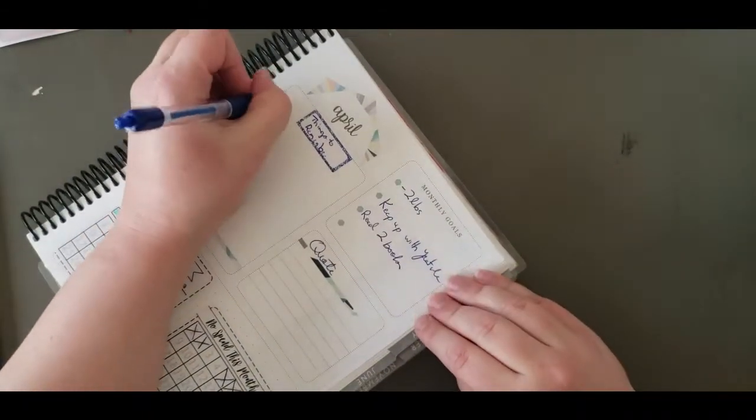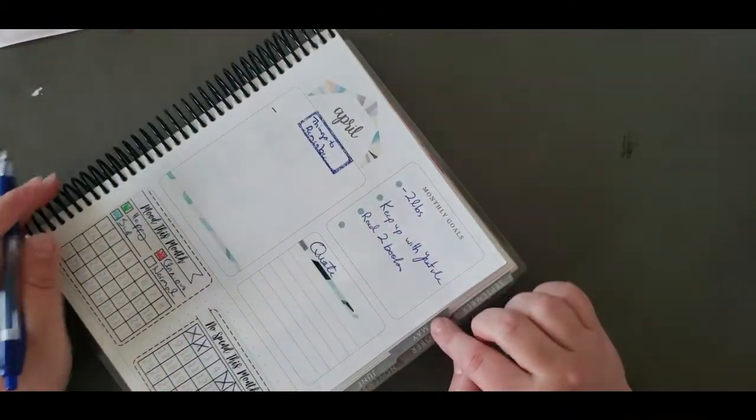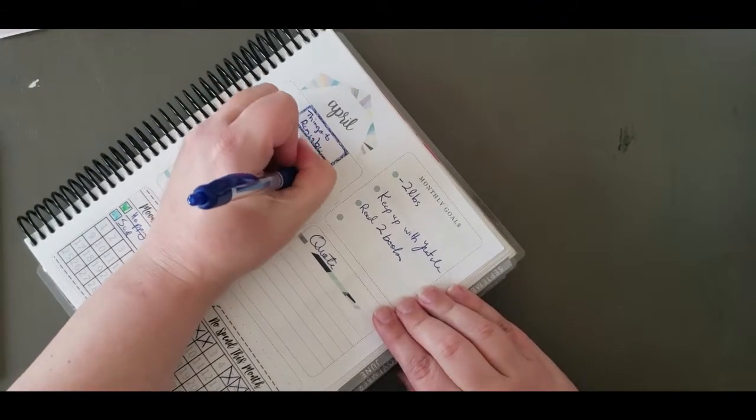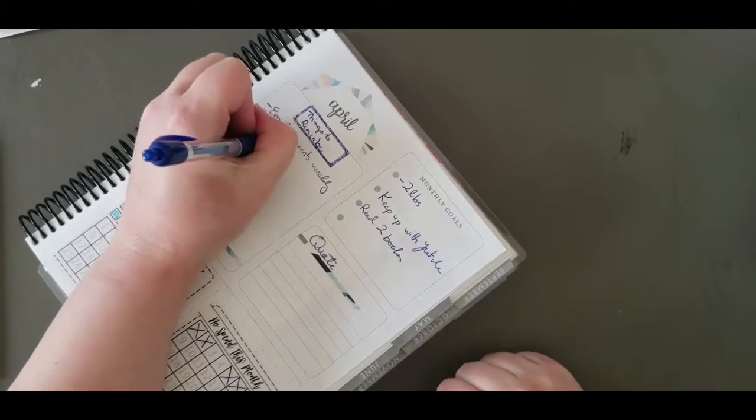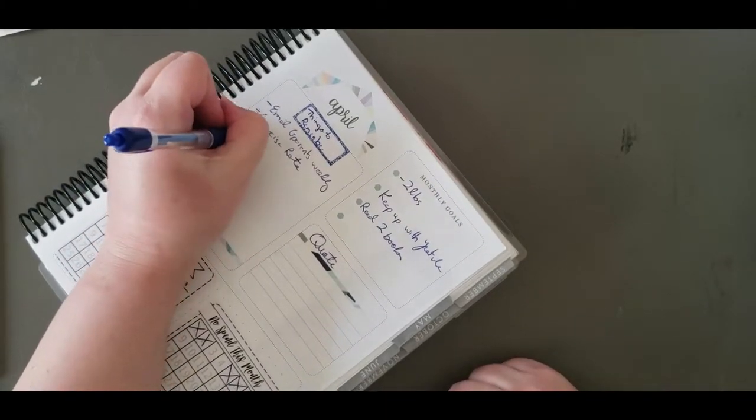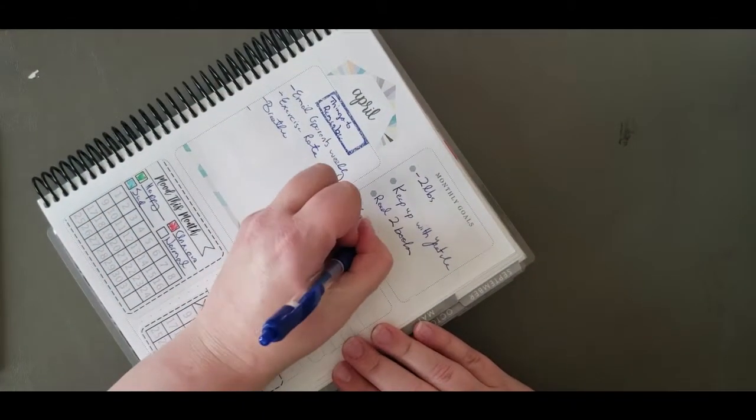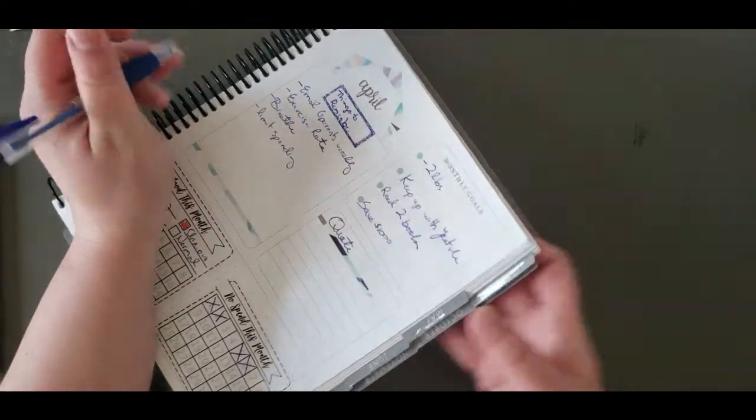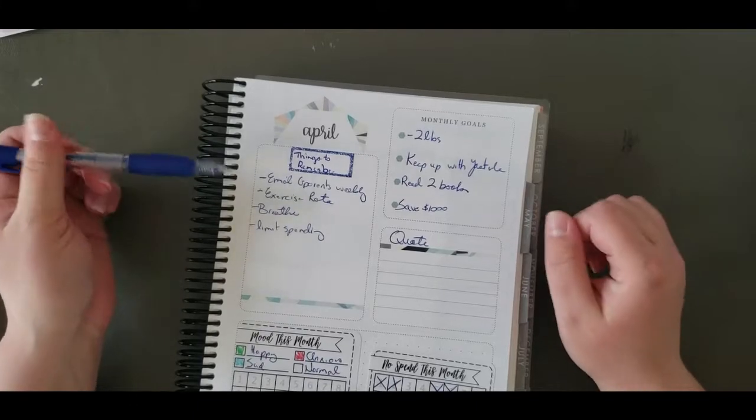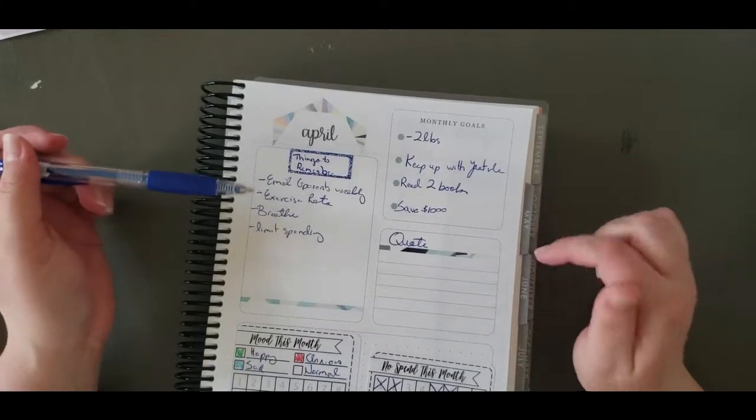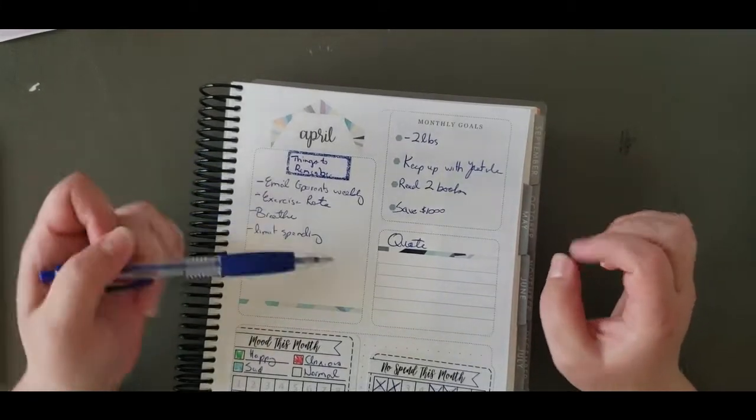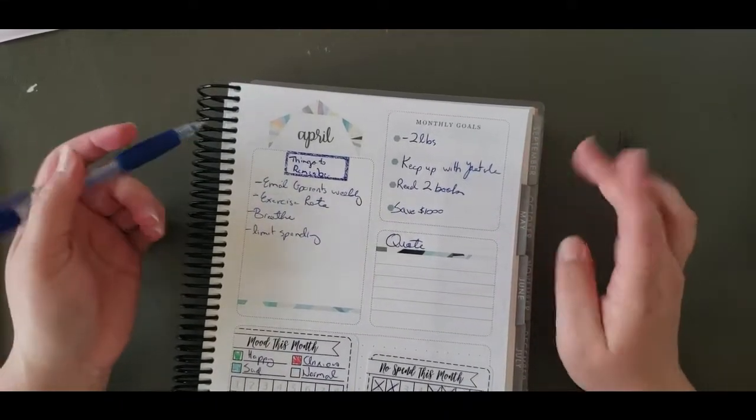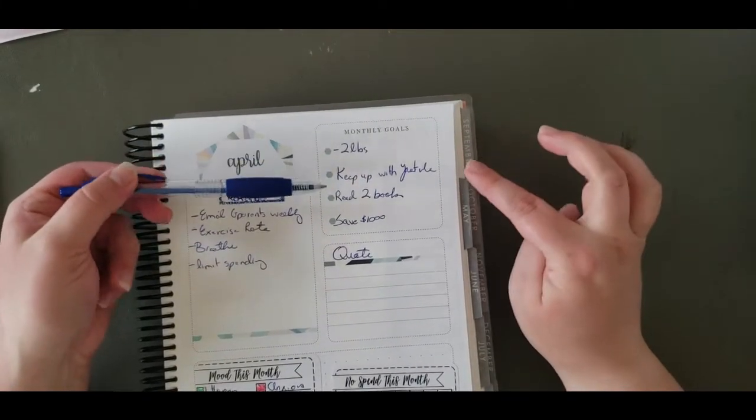All right. And then things to remember. So my things to remember this week, this month are to email my grandparents regularly, keep my exercise rotation that I have going going, take deep breaths and limit my spending.